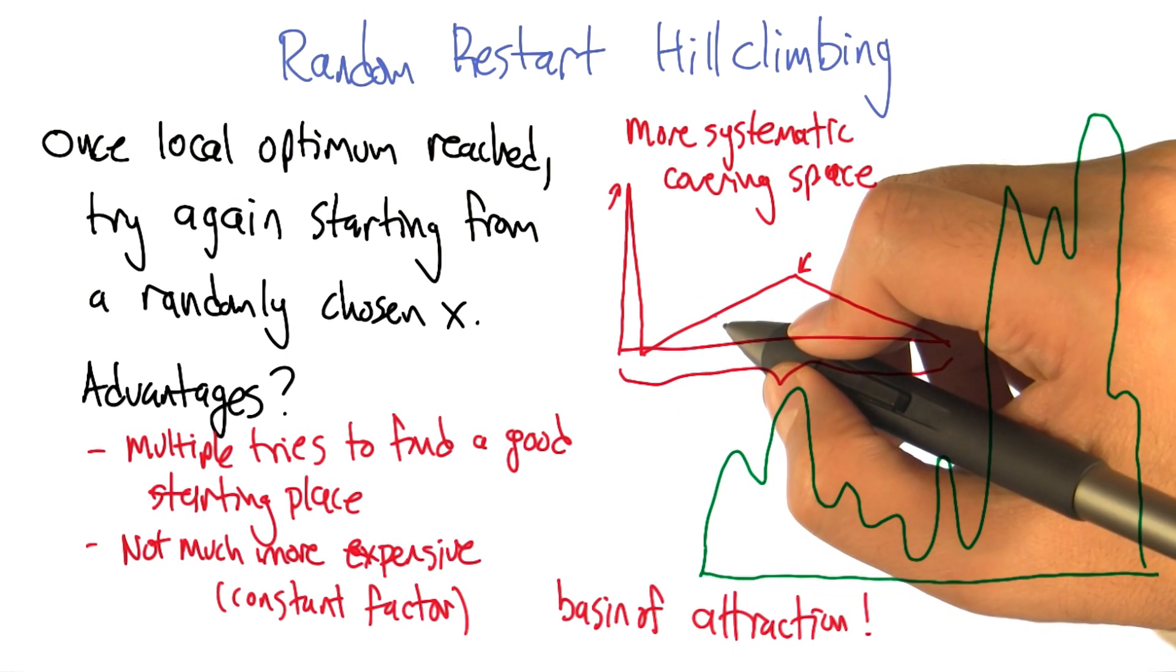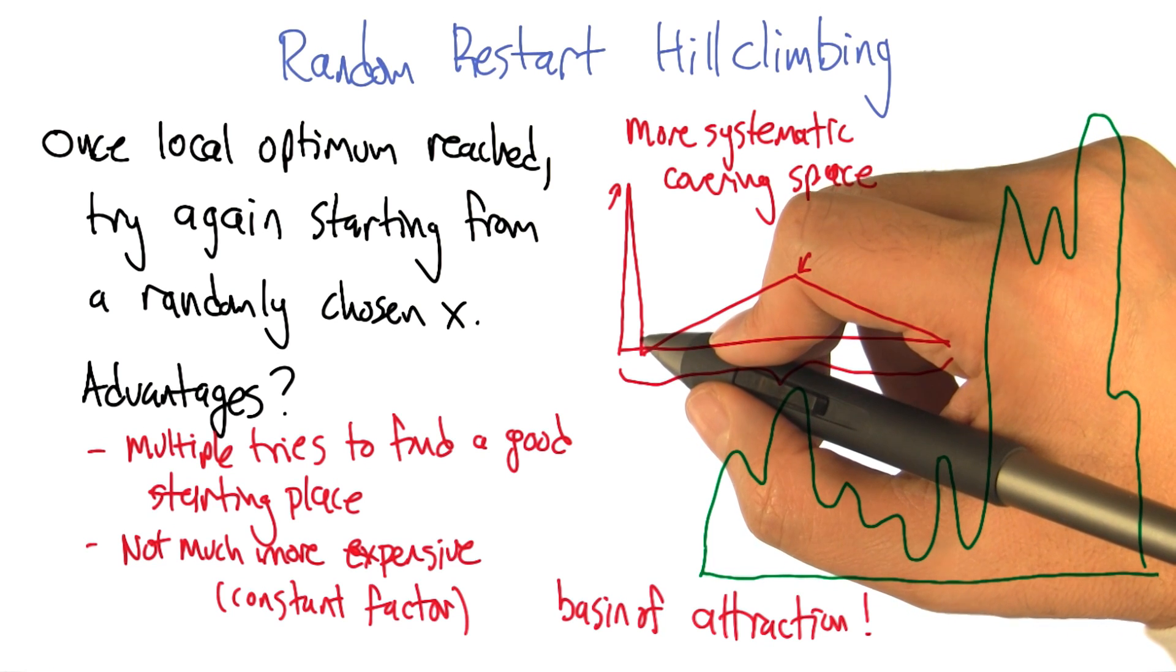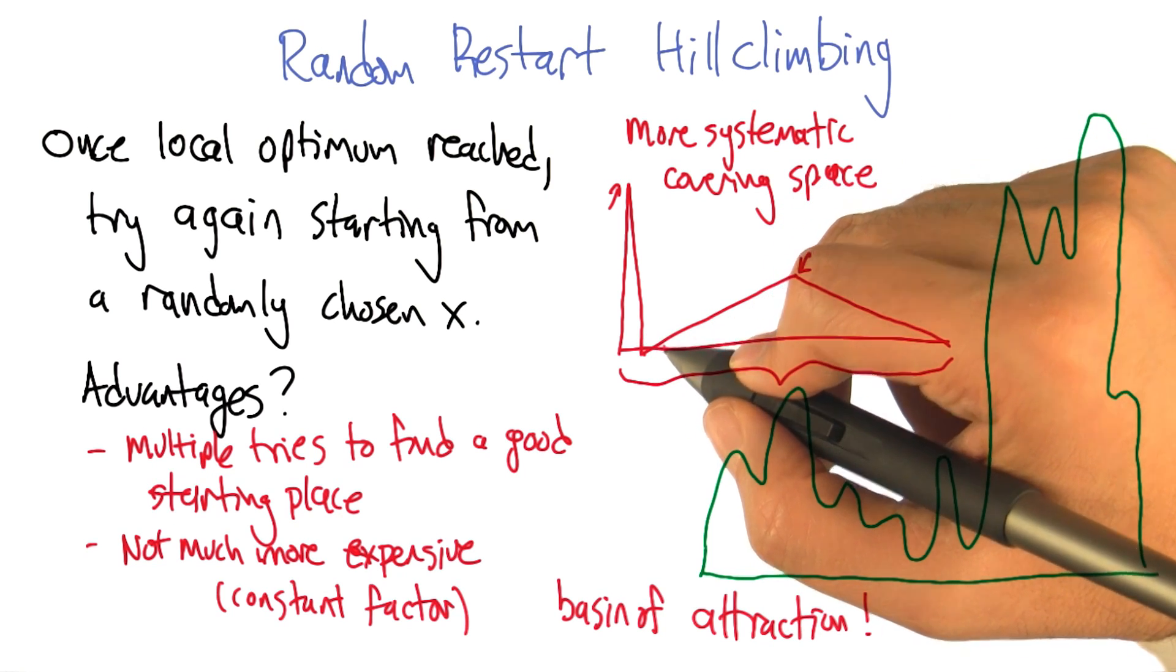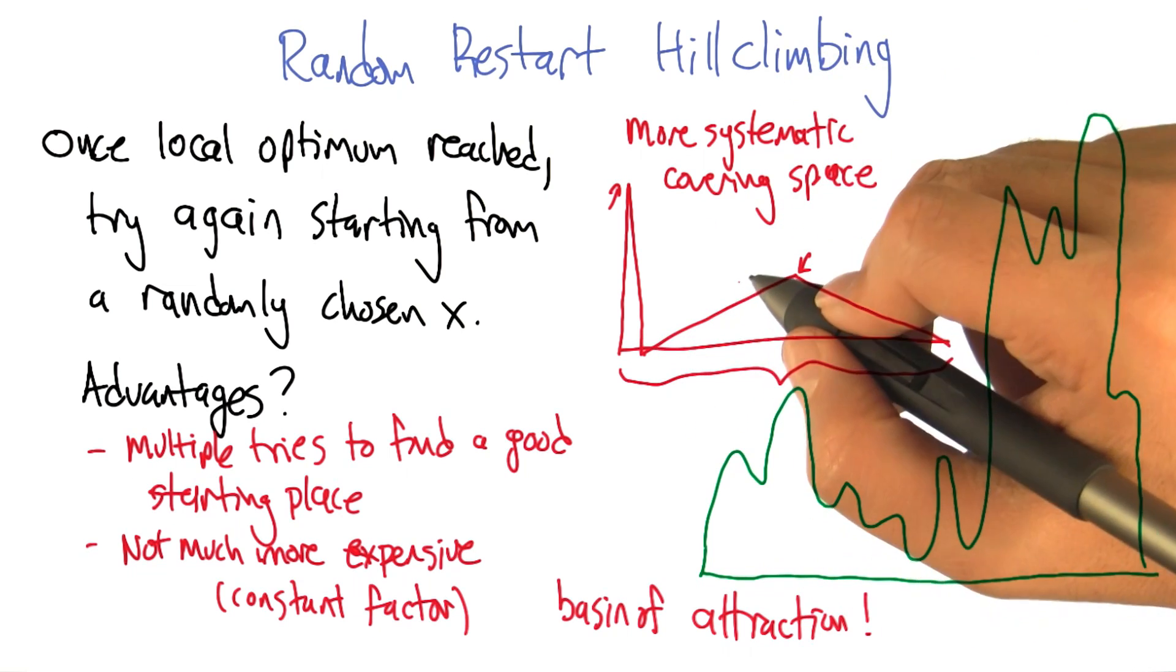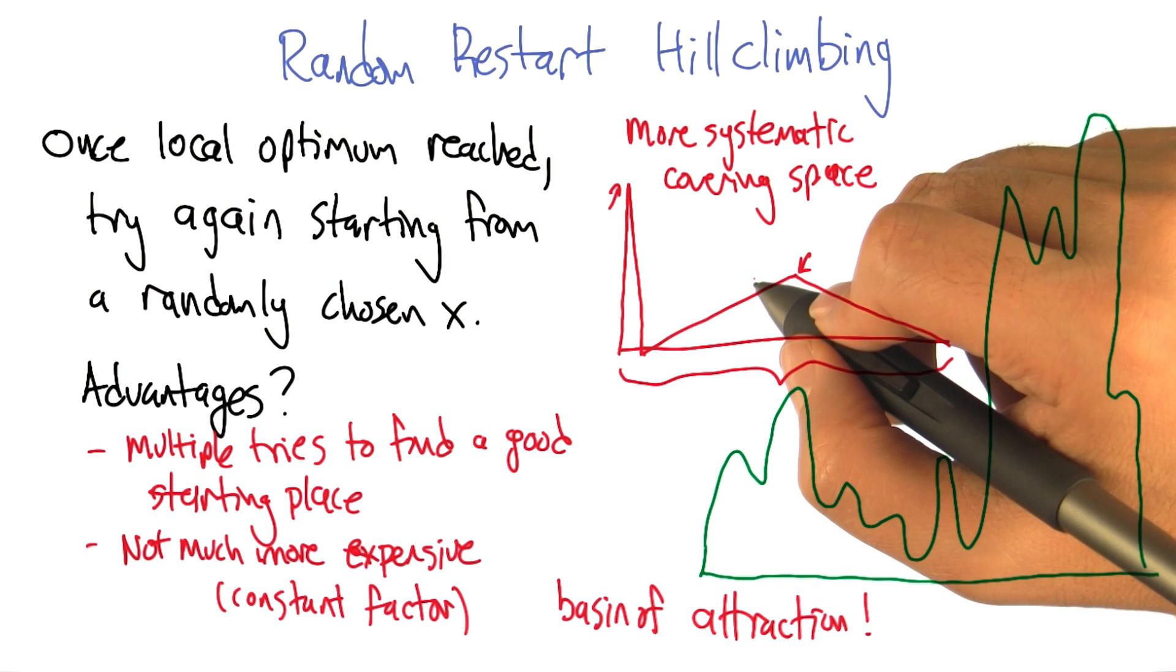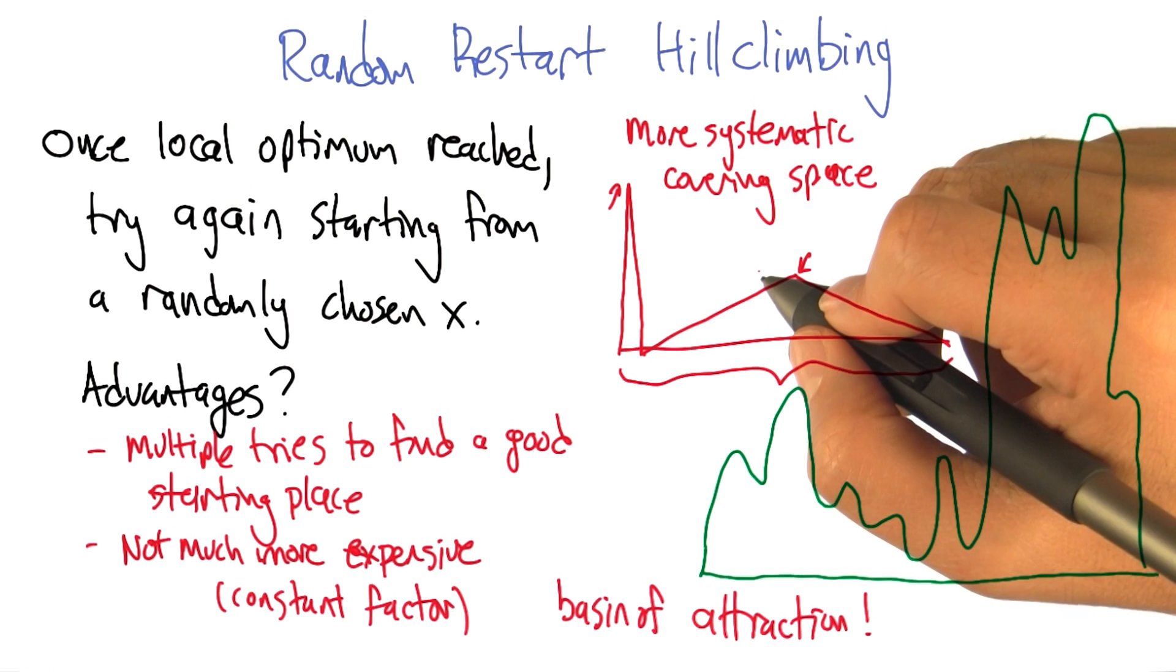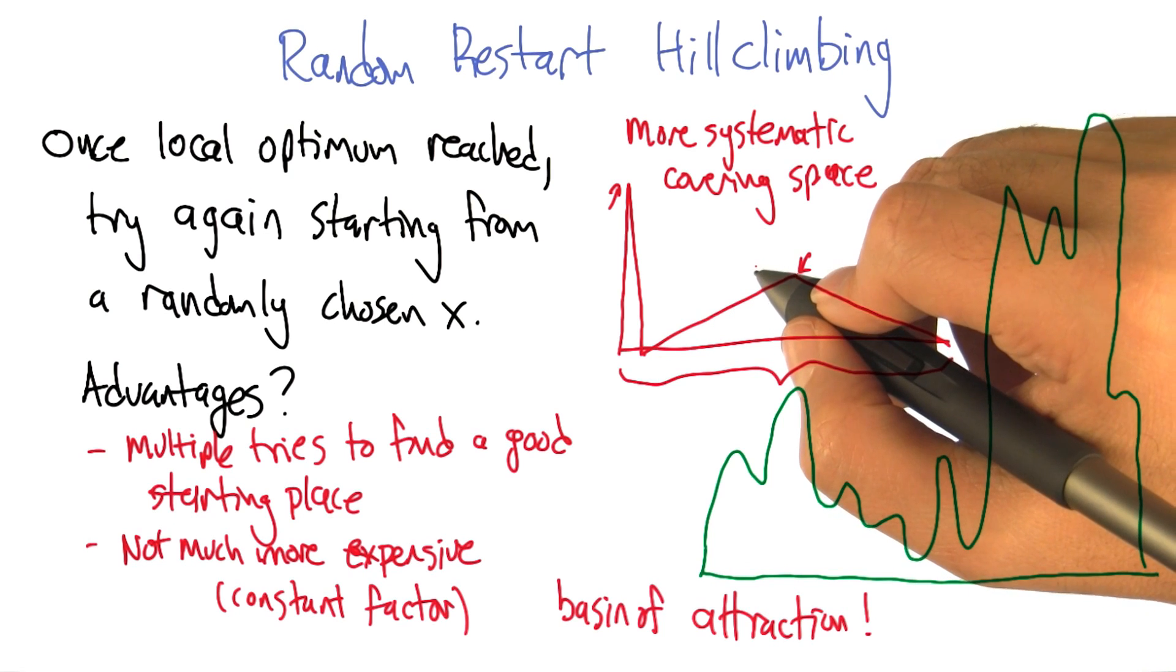In fact, it could be a needle in a haystack, in which case there's only one place that you could start that has that optimum, and that could take a very long time to luck into. In fact, the hill climbing part isn't doing anything for you at that point. But if you're in a world where there's only one point that's maximum, and there's only one way to get to it by having to land on a single point, then you're in a bad world anyway. There's nothing that's going to work out, nothing's going to help you in that world.